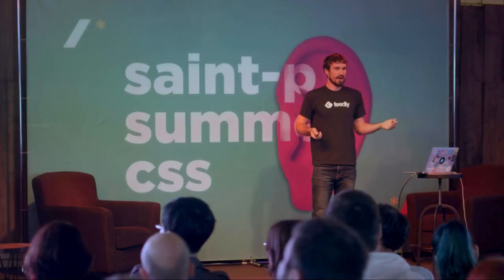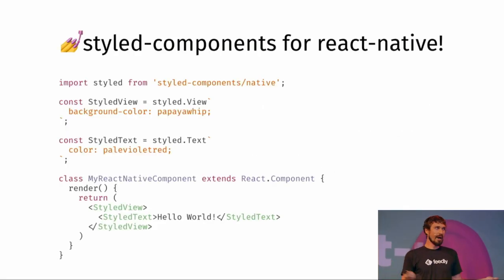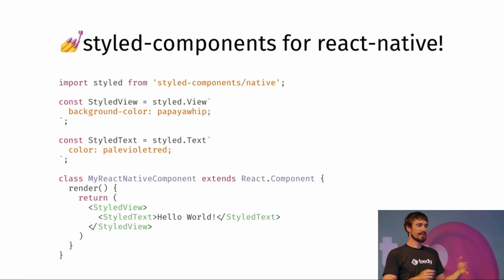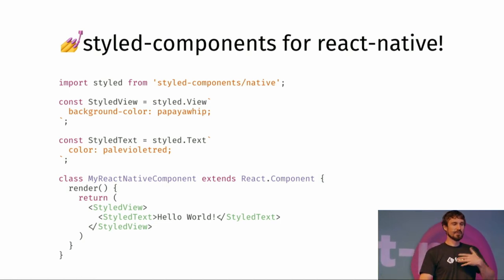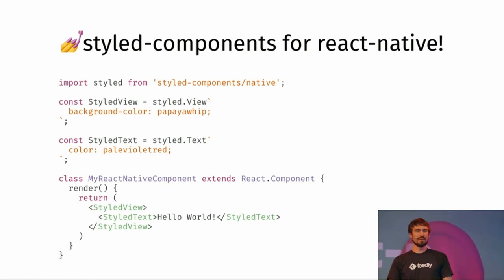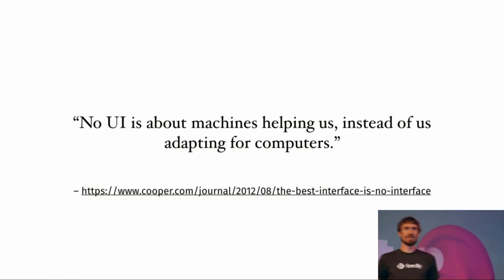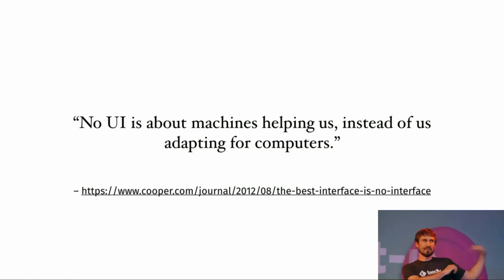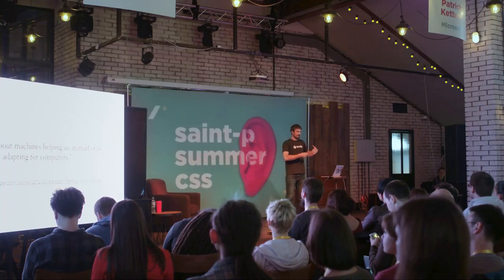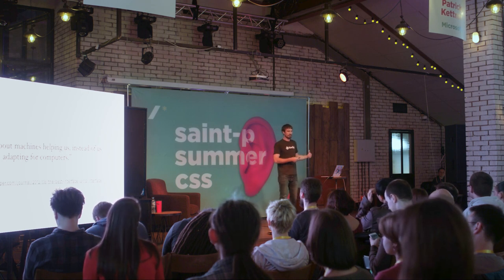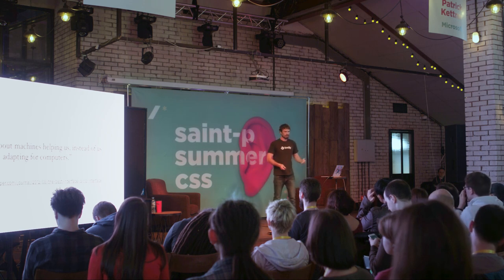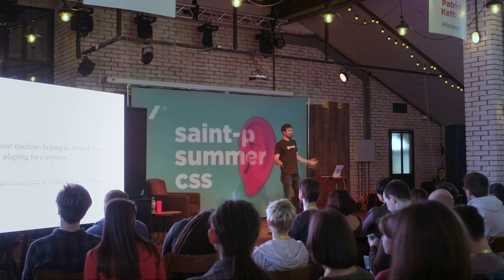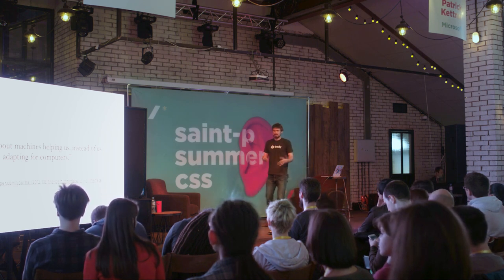Because the model is the same and styles are just an implementation detail, why not reuse it in React Native? It's just a platform detail — you can use the same styles to style your React Native application on your phones. How amazing is this? It's kind of this 'no UI' concept defined by Alan Cooper — machines helping us instead of us adapting to computers. The first separation of concerns principle is us adapting to machines: JavaScript, CSS, HTML. I want to think about my UI, not about these implementation details.